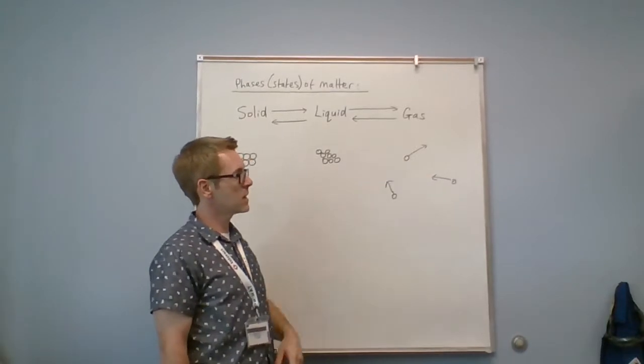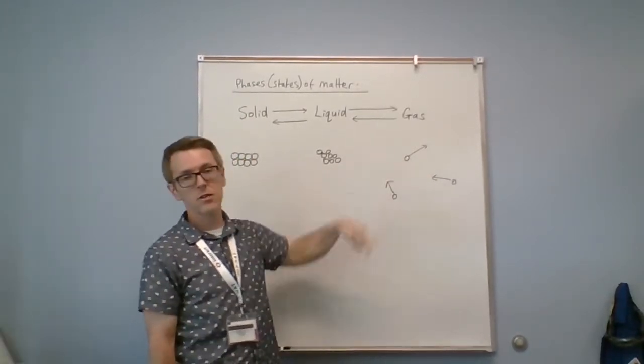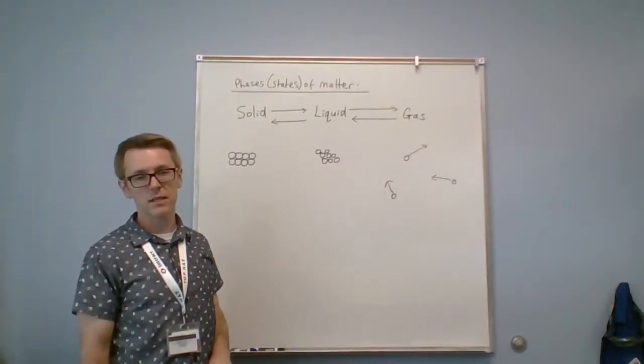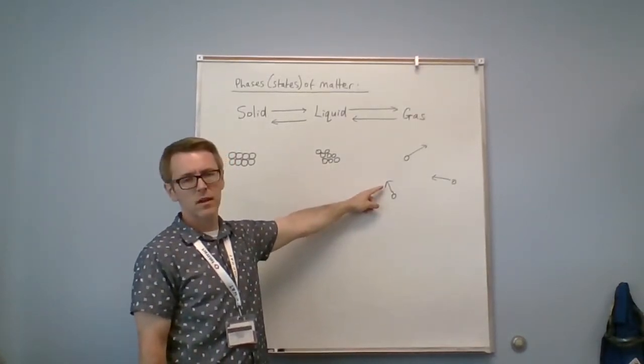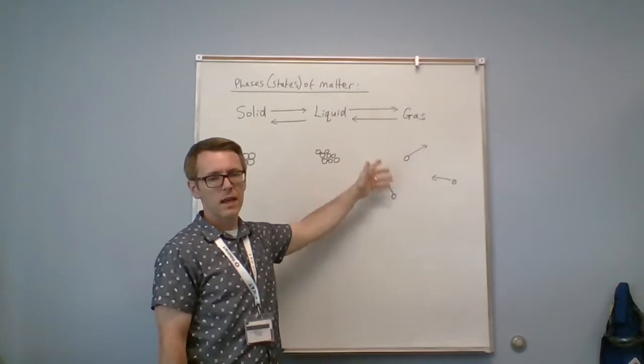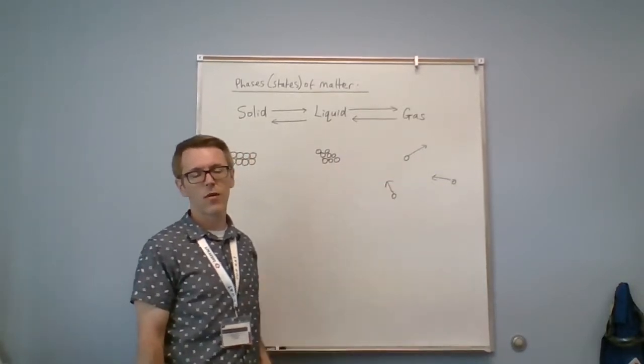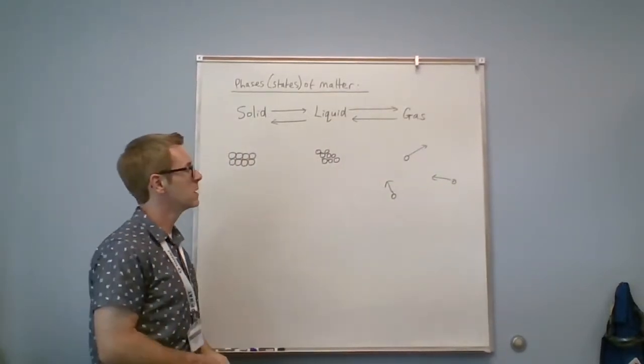However, in the gaseous phase, there's large separations between adjacent pieces. These arrows represent motion. So these are very chaotic. This is a very chaotic form of matter with motion.